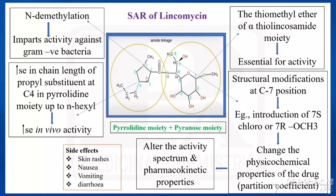This part is called the pyrrolidine moiety and this is called the pyranose moiety. What is the name of the pyrrolidine moiety? That is 4-propyl hygric acid. And what is the name for the pyranose moiety? That is methyl-thio-lincosamine. These two parts are united to form an amide linkage, and that would be the structure for lincomycin.